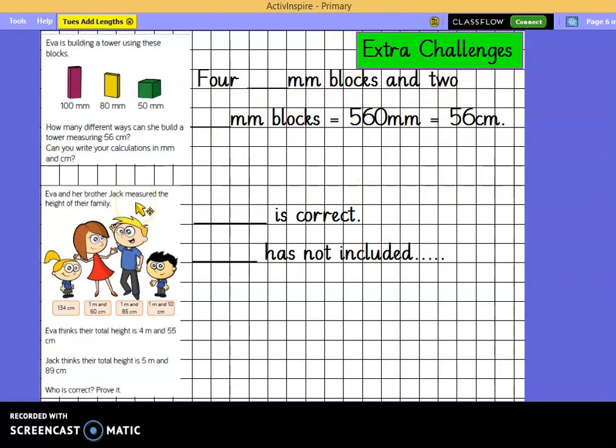Eva and her brother Jack measured the height of the family. Here's Eva. Here's Jack. And here are their parents. And they've measured the height. Eva thinks their total height is 4 metres and 55 centimetres. Jack thinks their total height is 5 metres and 89 centimetres. Who is correct? And prove it using maths, please. Here are some sentence stems to help you. Somebody is correct. Who has not included something when they were measuring and adding up?